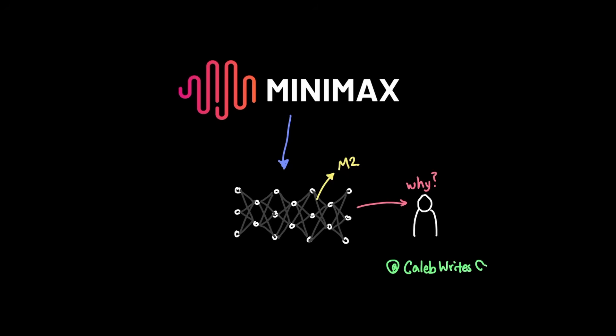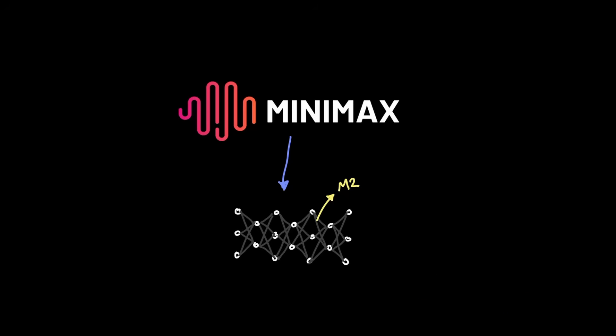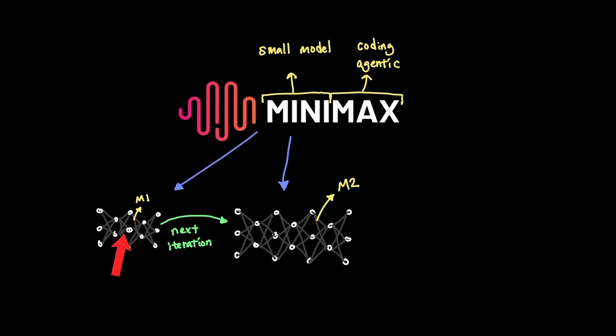Welcome to Caleb Wright's code where every second counts. As the name stands, Minimax's goal is to release many models in size for the purposes of maximum coding and agentic use cases. The M2 model is the next iteration from the previous M1 model. And here are two reasons why M2 stands out in its architecture.